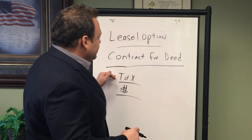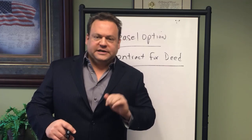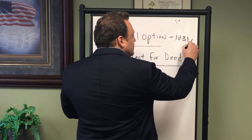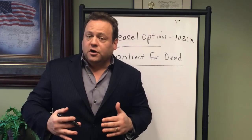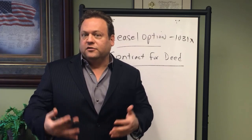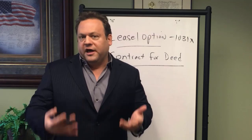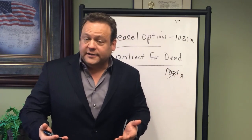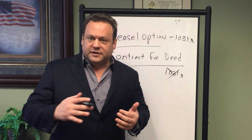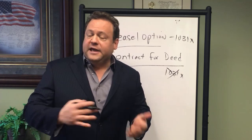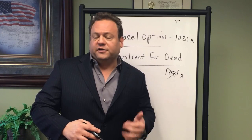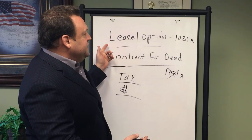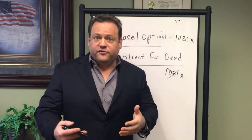One last tax point: if you do a lease with option with a tenant buyer where you're the seller and that tenant says they want to buy, you can do a 1031 exchange on the back end of that sale. The IRS doesn't call it a sale until the option is exercised, so when the tenant is ready to exercise, they give you notice, and you can roll the proceeds into another property under a 1031 exchange. You cannot do a 1031 exchange on a contract for deed — because you already sold it. If the buyer pays you on an amortized payment and then two years later wants to sell or refi and pay off the balance, you can't roll those proceeds under a 1031 because you already sold the property as soon as you signed the contract for deed.